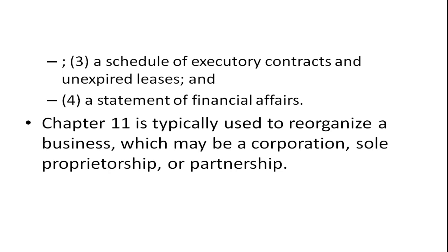There's also going to be a schedule of executory contracts and unexpired leases and a statement of financial affairs. This information is given to the court, and Chapter 11 is typically used to reorganize a business — a corporation, sole proprietorship, or partnership. Many companies have gone through this and reemerged successfully. General Motors went through something like this when the federal government bought their stock: they reorganized, labor had to give back some things, retirees had to give back something, bondholders had to give back something, and then the company came out of bankruptcy and had a public offering.